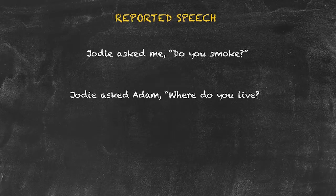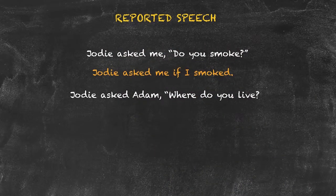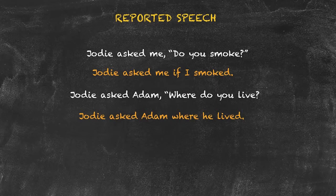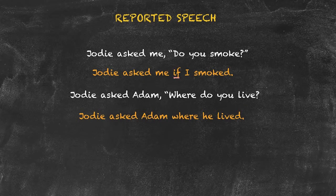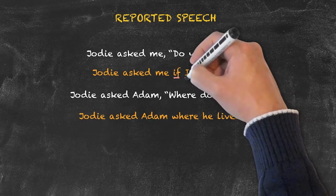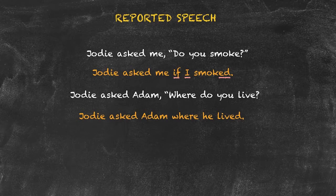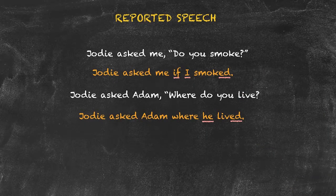In the original question, Jody asked me: 'Do you smoke?' We would report that question as a statement: 'Jody asked me if I smoked.' In the second question, Jody asked Adam: 'Where do you live?' We change the question to a statement: 'Jody asked Adam where he lived.' For yes/no questions, we add 'if' and drop 'do,' change pronouns, and shift the tense back to the past. For open-ended questions like 'Where do you live?', rather than adding 'if,' we still drop 'do,' make the pronoun change, and backshift the tense — resulting in 'Jody asked Adam where he lived.'